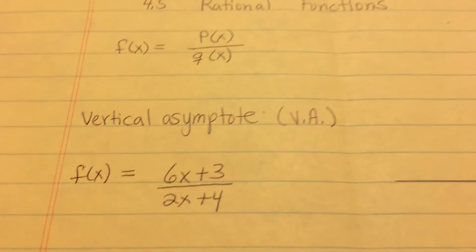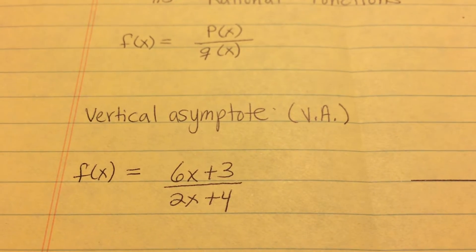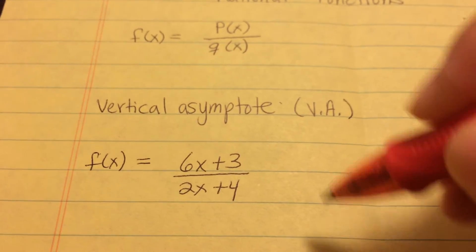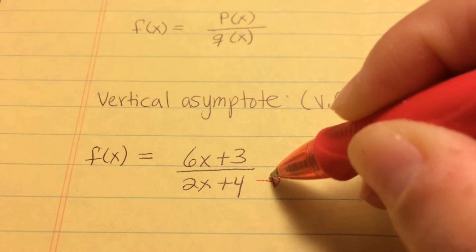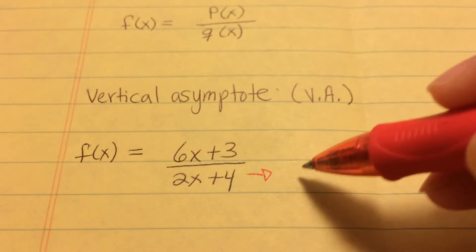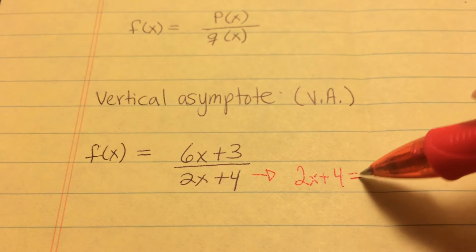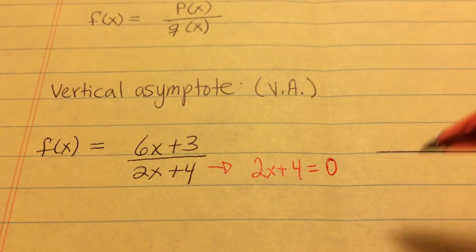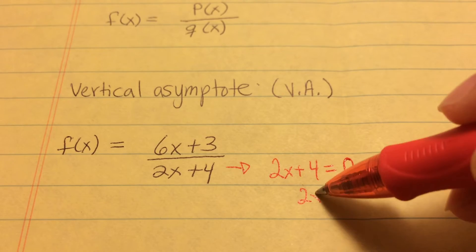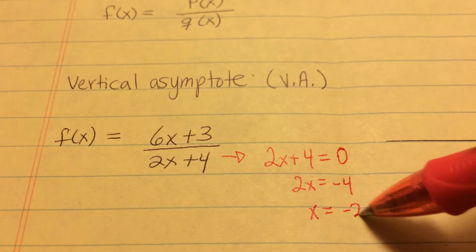The first type of asymptote is called the vertical asymptote. The vertical asymptote is found by taking the denominator and setting it equal to zero. So we're ignoring the numerator — we're just taking the denominator, setting it equal to zero, and solving for x. It's like finding the roots. So we set it equal to zero, bring the four over, get 2x equals negative four, divide both sides by two, and x equals negative two.